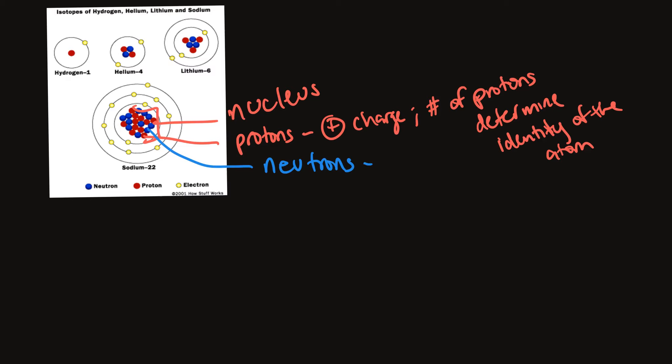Then you have neutrons. Neutrons have a neutral charge — there's no charge to them. This makes the nucleus overall have a positive charge, because the neutrons in the nucleus do not carry a charge. The neutrons' main purpose is to stabilize the nucleus — basically, neutrons keep the nucleus from falling apart or degrading. That's why the number of neutrons in a particular atom is very, very important.